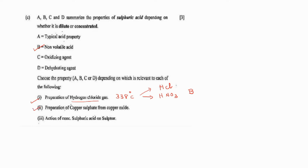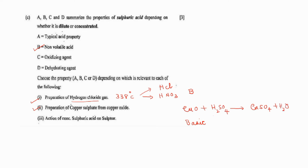Preparation of copper sulfate from copper oxide: you have copper oxide and need to prepare copper sulfate. Copper oxide is basic in nature, so you add an acid. You don't need a concentrated acid — with dilute acid you can prepare copper sulfate and water. So which property of sulfuric acid is utilized? It is acting as a normal dilute acid — typical acid property. Answer is A.